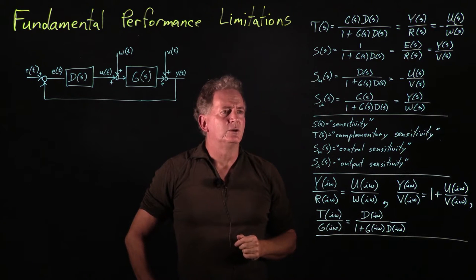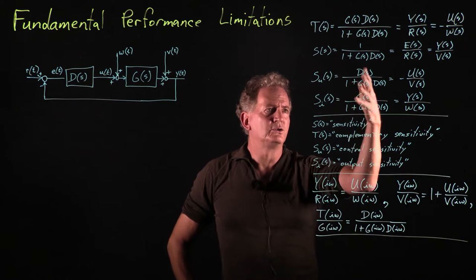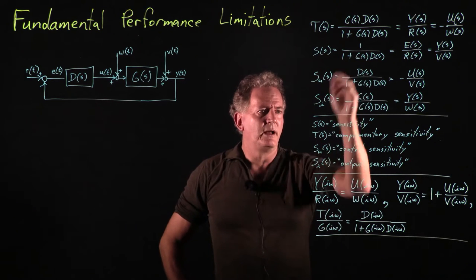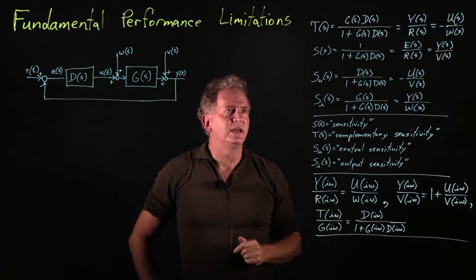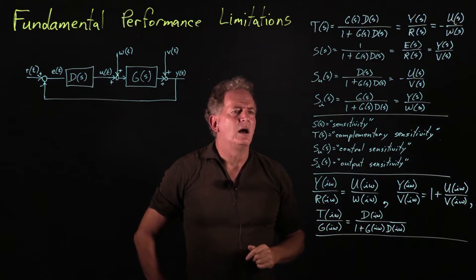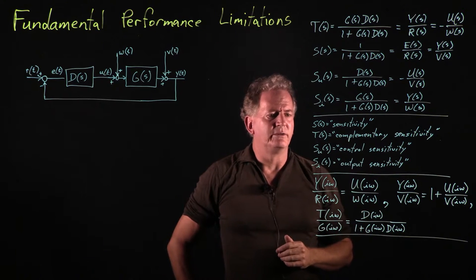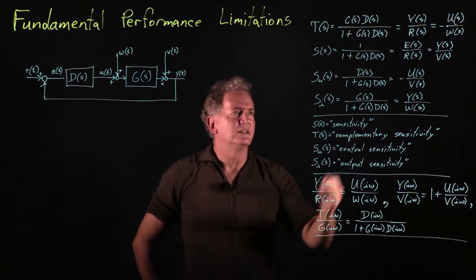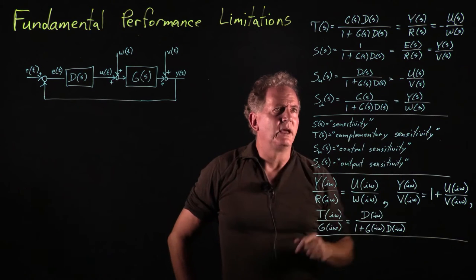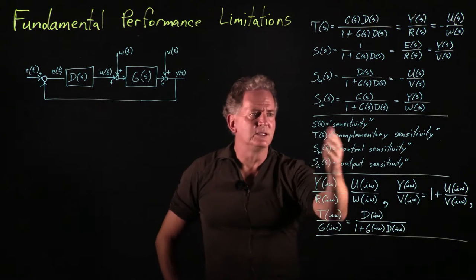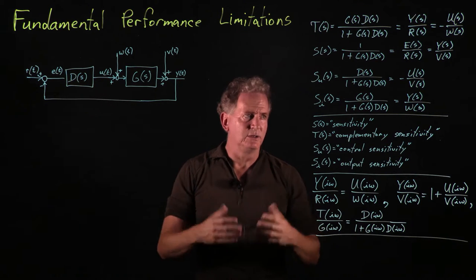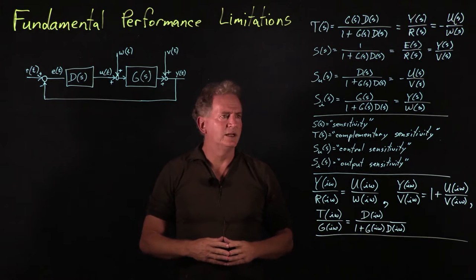We saw that in doing so we introduced four transfer functions of interest, commonly named: sensitivity S of S, complementary sensitivity T of S — where complementary sensitivity is just 1 minus the sensitivity — the control sensitivity Su of S, and the output sensitivity Si of S. They're related to the transfer functions from the various inputs to the various signals along this path. T of S is also sometimes called the closed loop transfer function because it's the transfer function from R to Y.